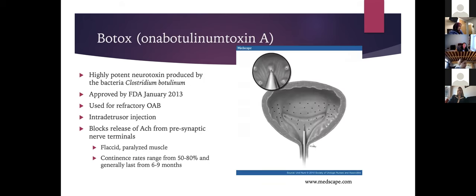Botulinum toxin (Botox) is a highly potent neurotoxin produced by Clostridium botulinum, FDA-approved in January 2013 for refractory OAB. It is injected into the bladder wall, blocking acetylcholine release from pre-synaptic nerve terminals to paralyze the detrusor muscle. Continence rates range from 50–80% and effects last 6–9 months, requiring repeat injections. The main risk is urinary retention — patients must be counseled on and willing to perform self-catheterization if needed.